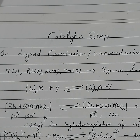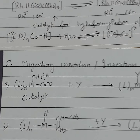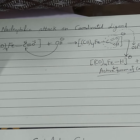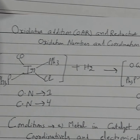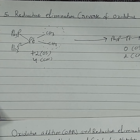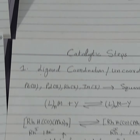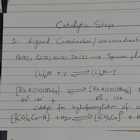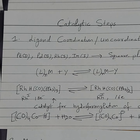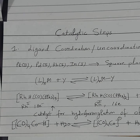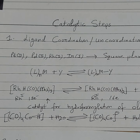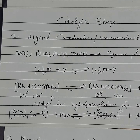The first one is ligand coordination and uncoordination. The first step in the catalytic cycle is ligand coordination and uncoordination. Generally, platinum with +2, palladium with +2, rhodium with +1, and iridium with +1 — these four metals in square planar geometry follow the 16-electron system and undergo ligand coordination, meaning the substrate coordinates to the metal directly in the first step.